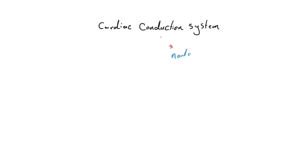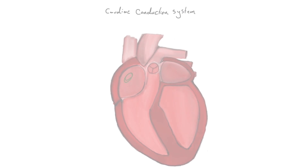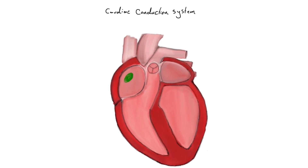Thanks to these features, the conduction system is able to generate, conduct, and coordinate electrical impulses efficiently, making sure the heart beats in a synchronized and rhythmic way. The system includes two main nodes located in the right atrium, connected by internodal pathways — special fibers that carry the electrical impulse from one node to the other.